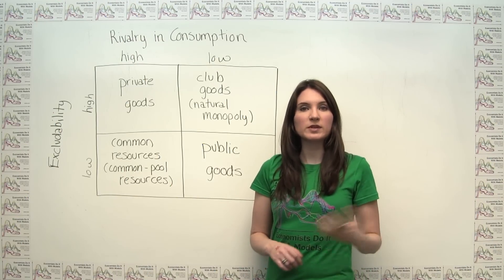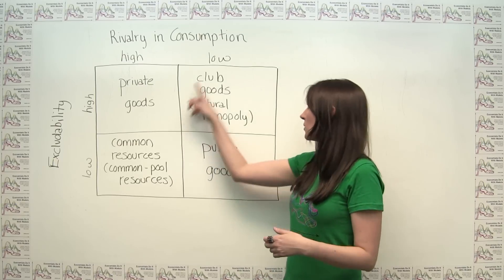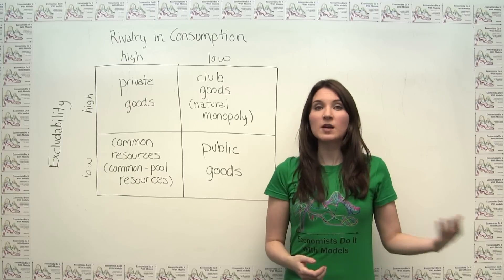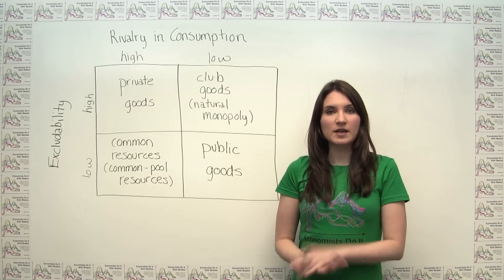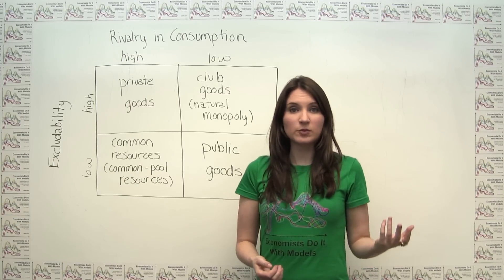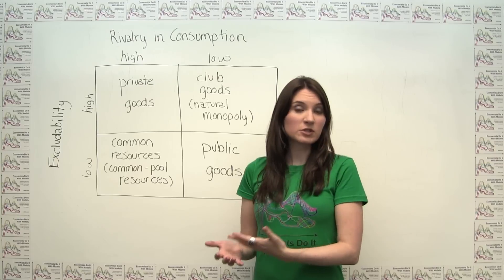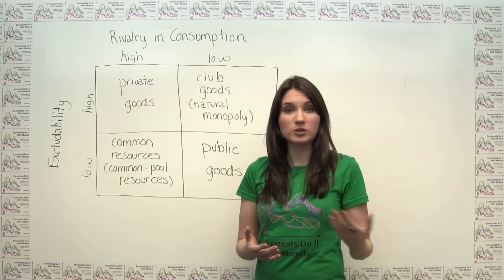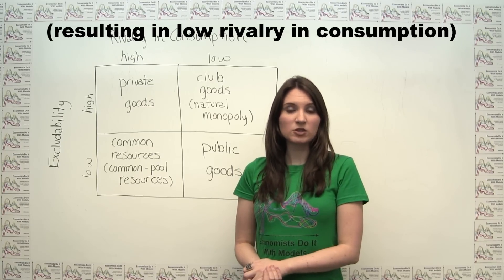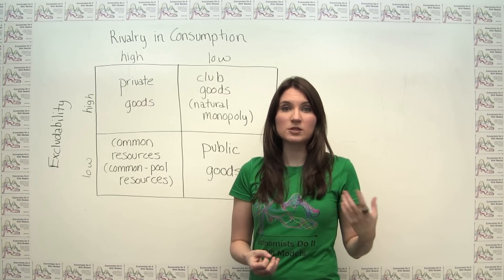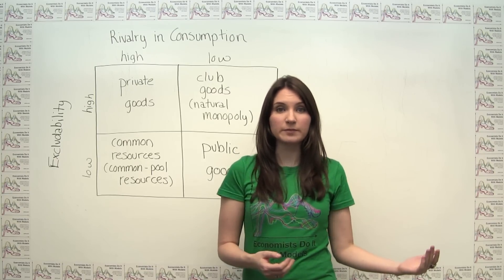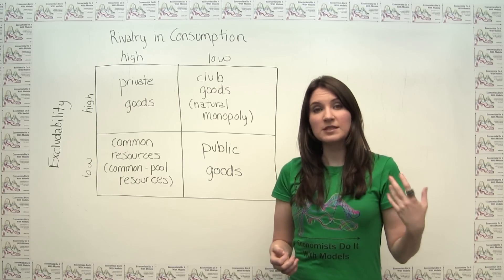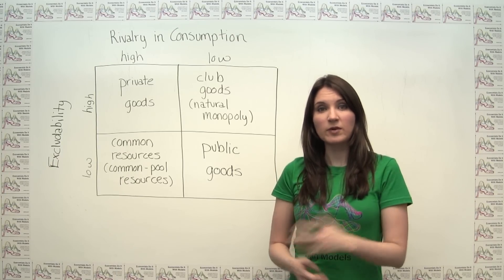Goods that are excludable but non-rival are known as either club goods or natural monopolies. Specifically, club goods are one type of natural monopoly. One common example of a club good is a cable television provider, since service is restricted to paying customers, but the marginal cost of providing service to one more customer is virtually zero. These goods are referred to as natural monopolies because market forces usually make them a type of monopoly, but the specific features of natural monopolies make them different from regular monopolies from a regulation standpoint.